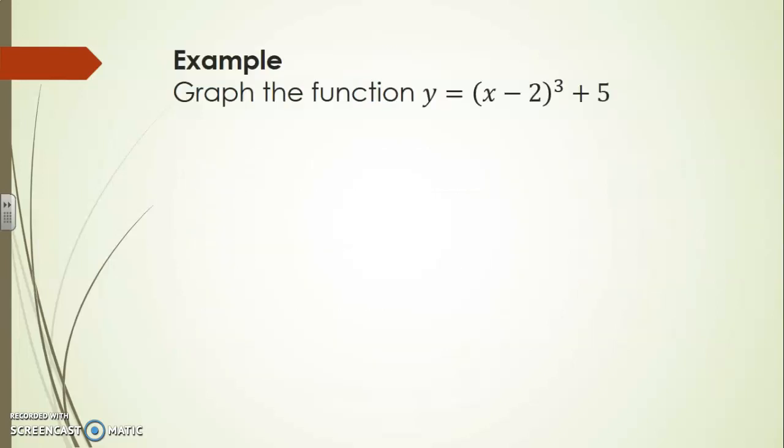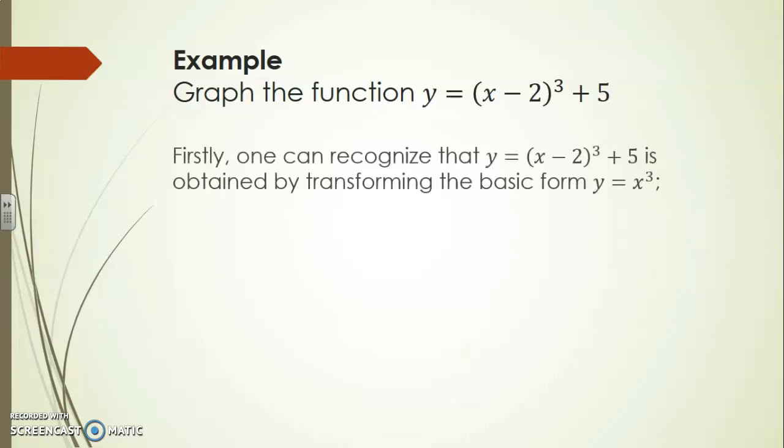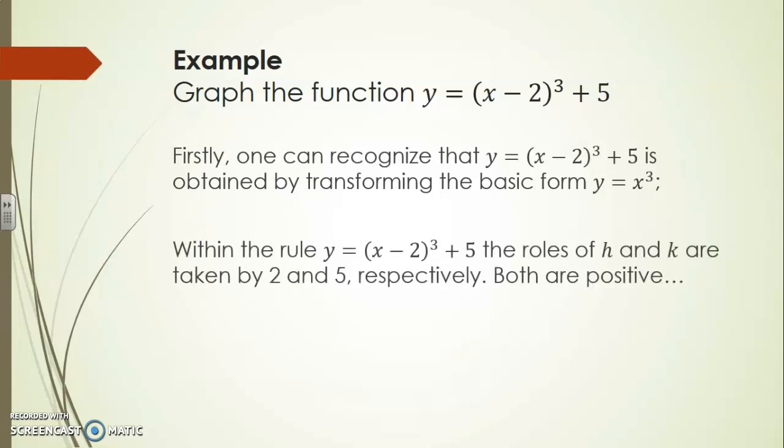For instance let's consider the graph of the function y equals x minus 2 cubed plus 5. First let's recognize that y equals x minus 2 cubed plus 5 is actually just a transformation of the basic form y equals x cubed. Within the rule y equals x minus 2 cubed plus 5 the roles of h and k are taken by 2 and 5 respectively. They're both positive.